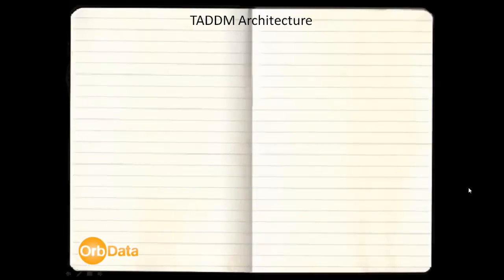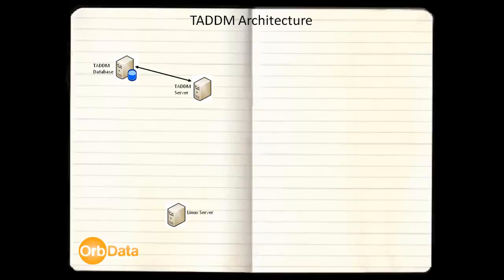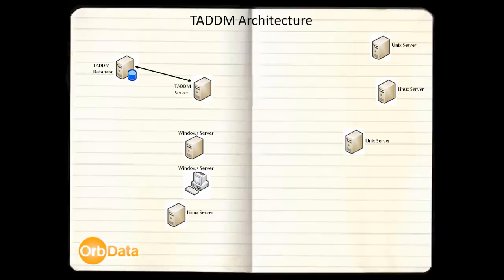Now we have an understanding of how TADM works, let's take a look at the architecture needed. We first need a TADM server and also a TADM database. TADM supplies over 100 sensors out of the box, covering mainstream operating systems, application servers, database servers, network switches, etc. If there isn't an out-of-box sensor available to discover one of your components, TADM can generally be configured to discover unknown components using a combination of custom server templates and custom server extensions.